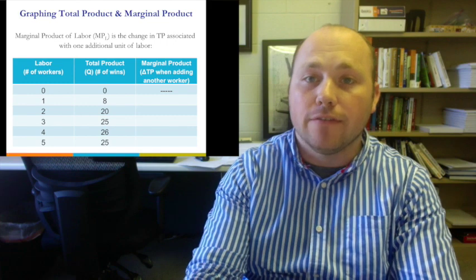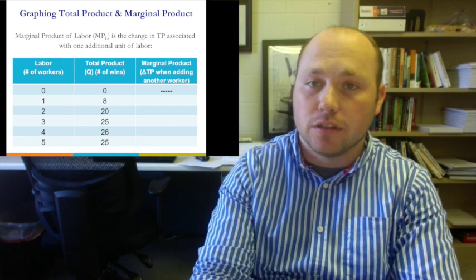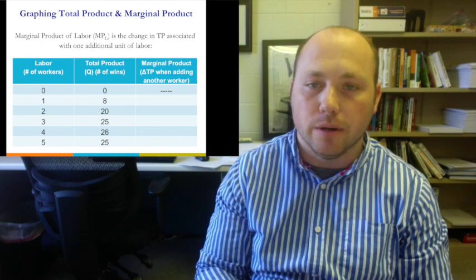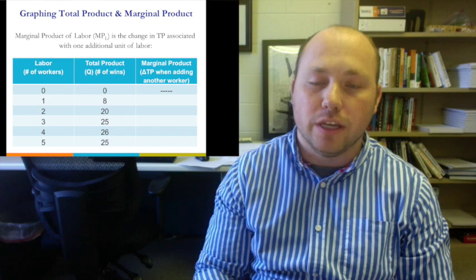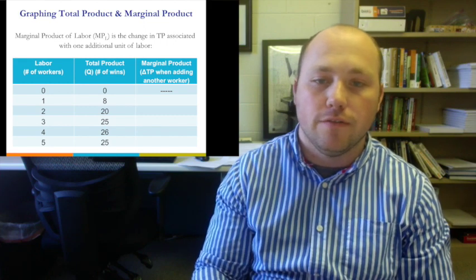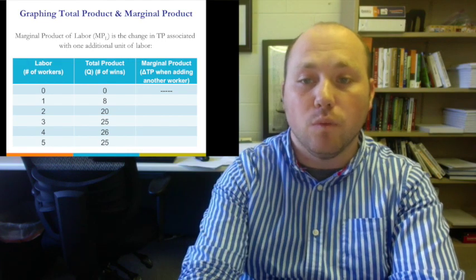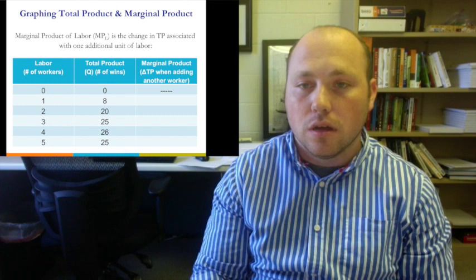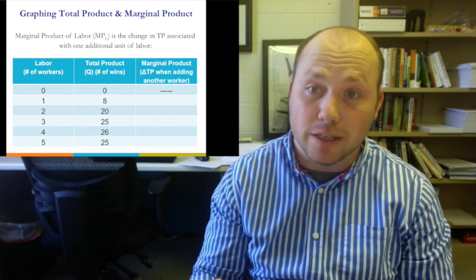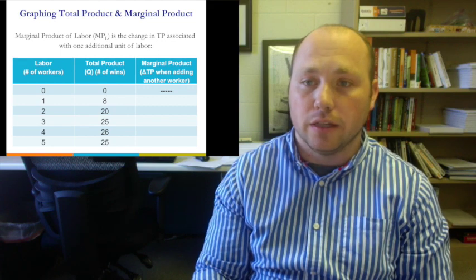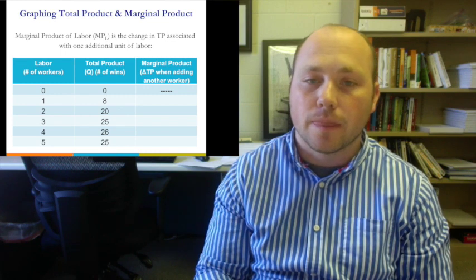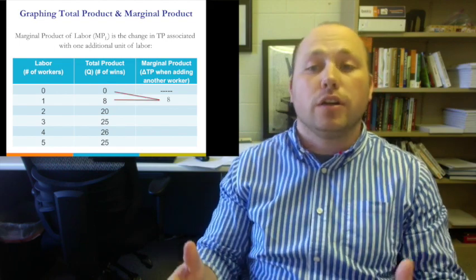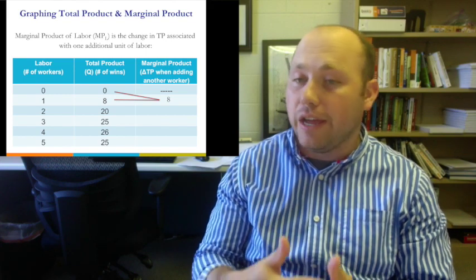Let's work through the table to graph marginal product of labor. Marginal product of labor is the change in total product associated with one additional unit of labor. As we increase workers from 0 to 1, 2, 3, 4, and 5, we track the total number of wins produced. Going from 0 to 1 worker, total product increases from 0 to 8 — that worker added 8 wins. Going from 1 to 2 workers, total product increases from 8 to 20, so the second worker added 12 wins.